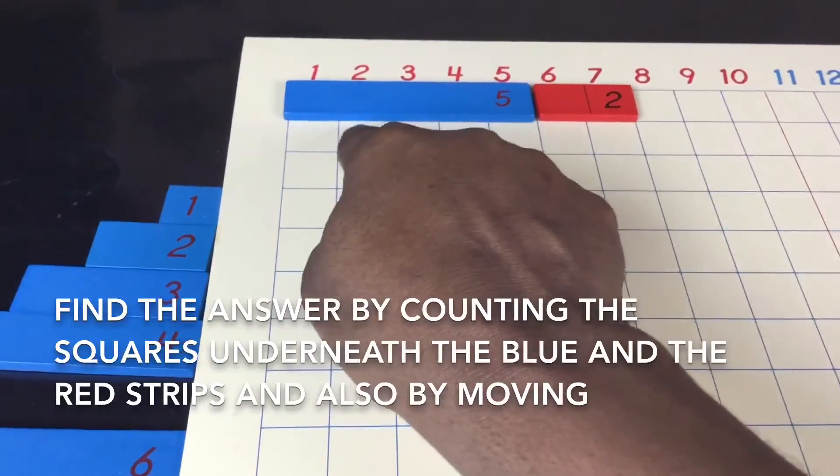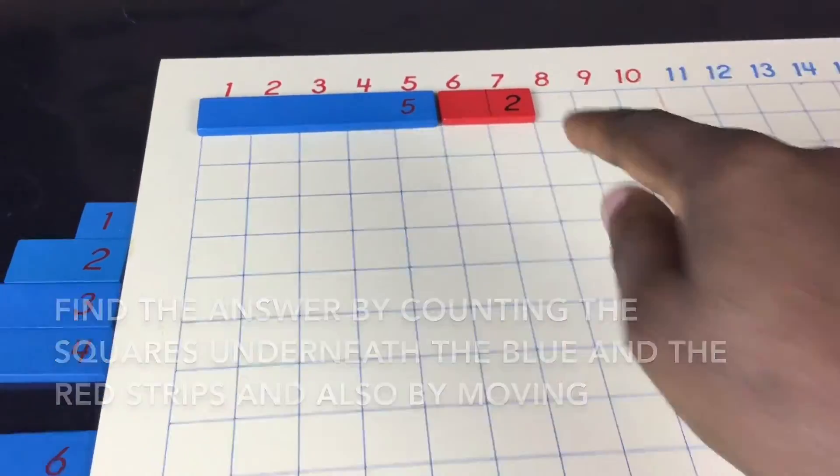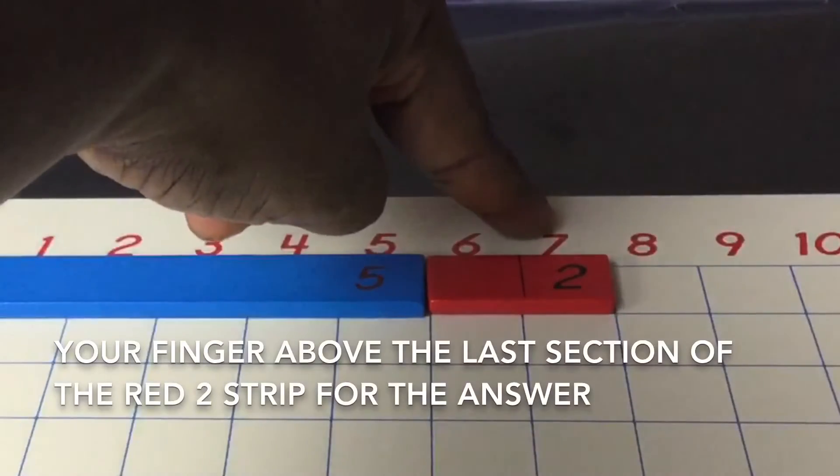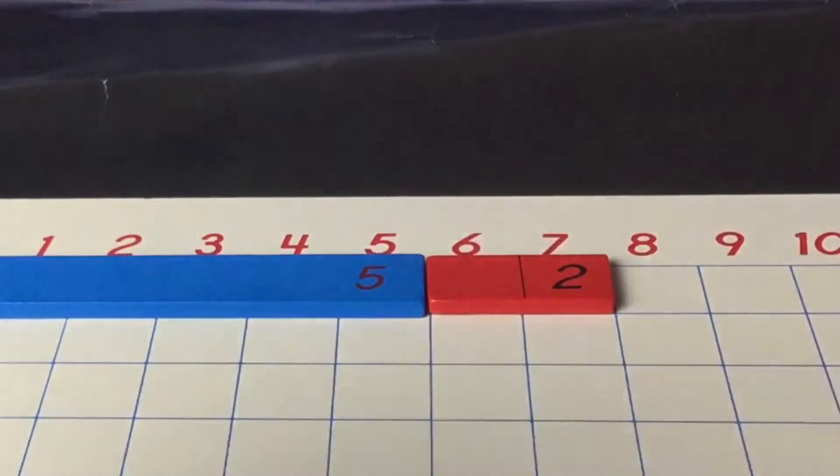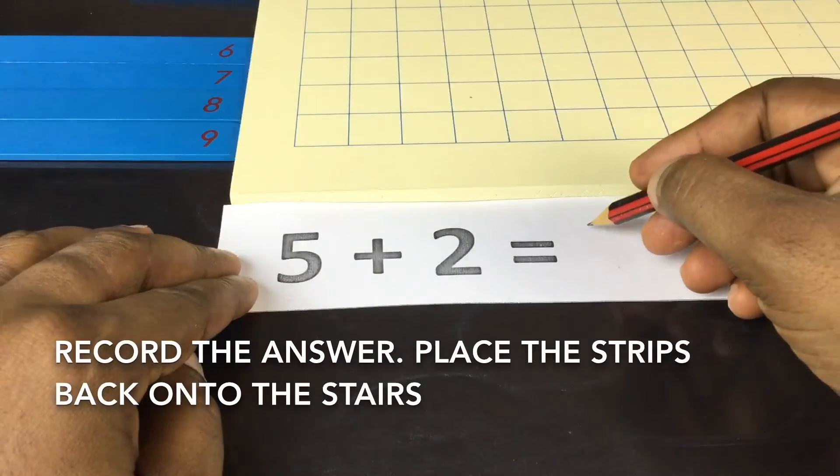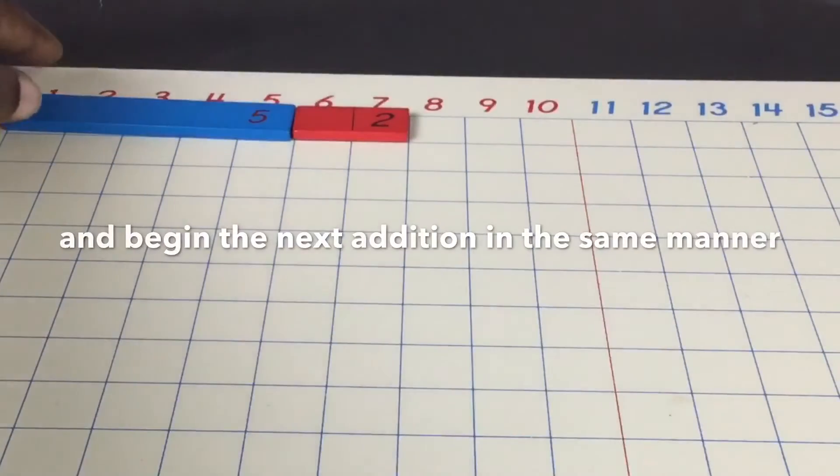Find the answer by counting the squares underneath the blue and the red strip and also by moving your finger above the last section of the red two strip for the answer. Record the answer, place the strips back onto the stairs, and begin the next addition in the same manner.